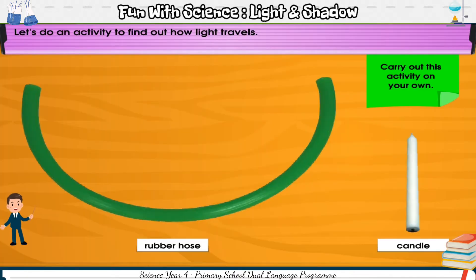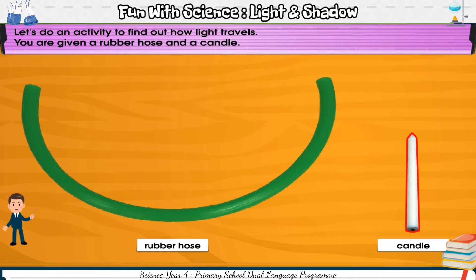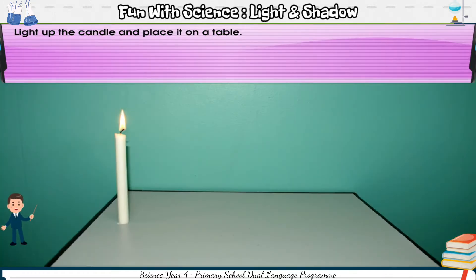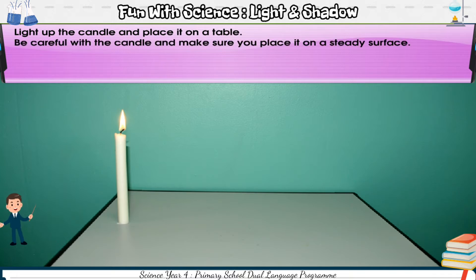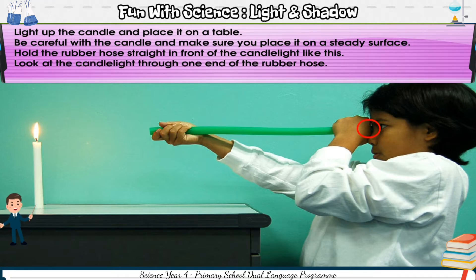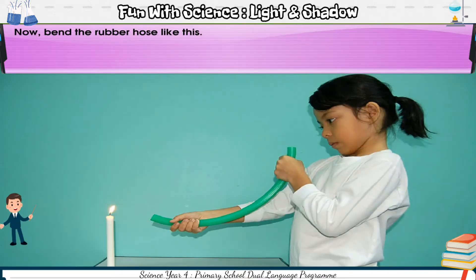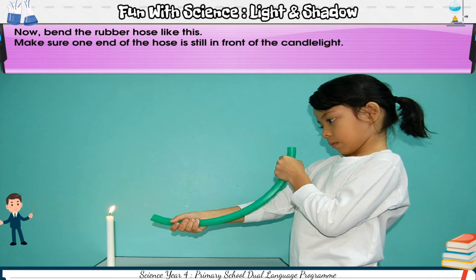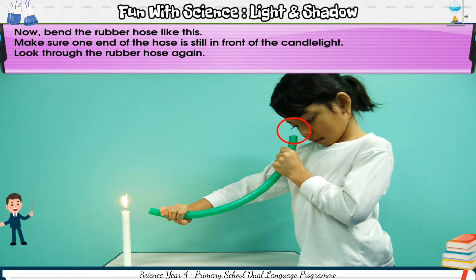Do an activity to find out how light travels. You are given a rubber hose and a candle. Light up the candle and place it on a table. Be careful with the candle and make sure you place it on a steady surface. Hold the rubber hose straight in front of the candle light. Look at the candle light through one end of the rubber hose. Can you see the candle light? Now bend the rubber hose. Make sure one end of the hose is still in front of the candle light. Look through the rubber hose again. Can you see the candle light?